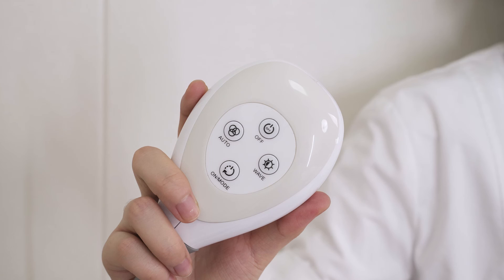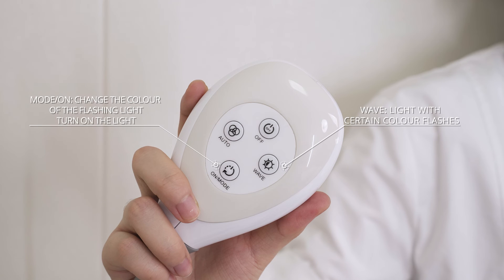There are four buttons on the handpiece. Wave: light with a certain color flashes. Mode/On: changes the color of the flashing light or turns on the light. Auto: lights with multiple colors flash cyclically. Off: turns off the light.